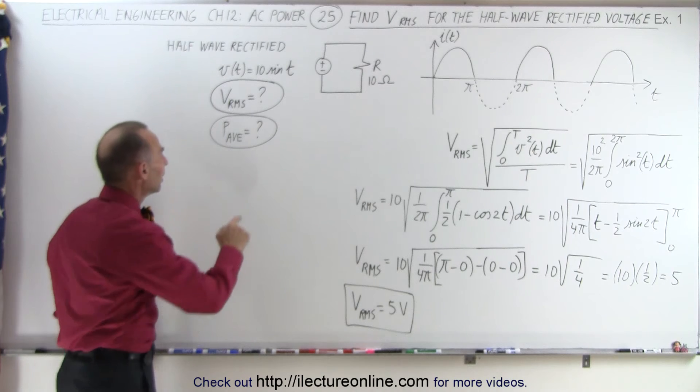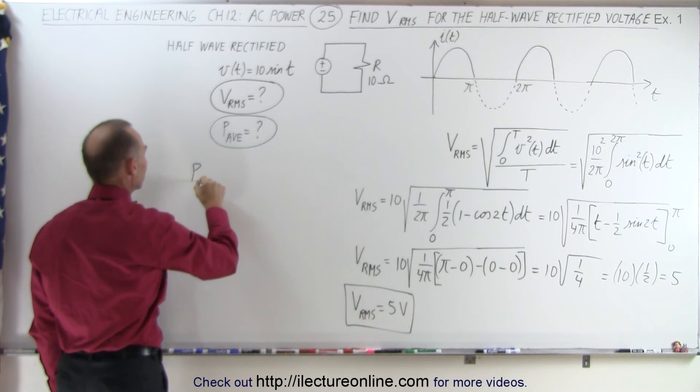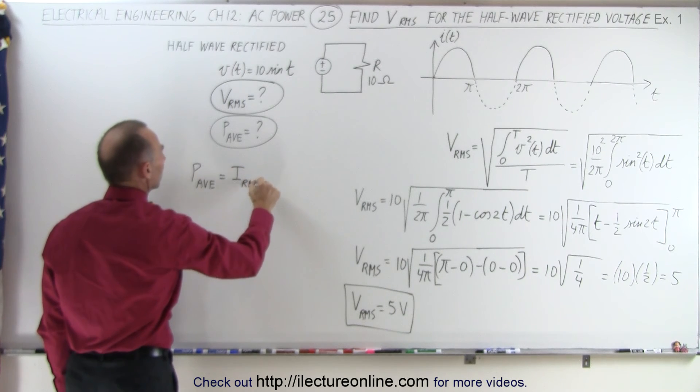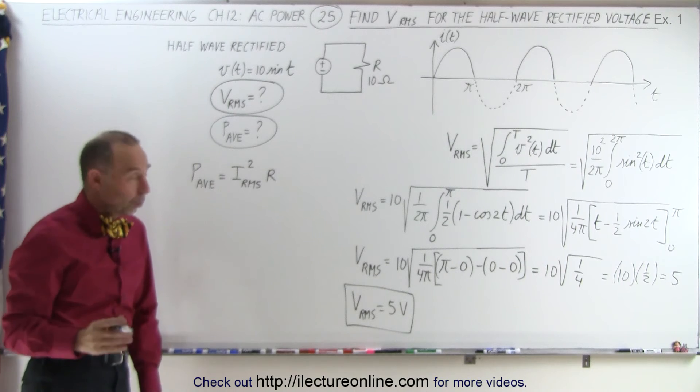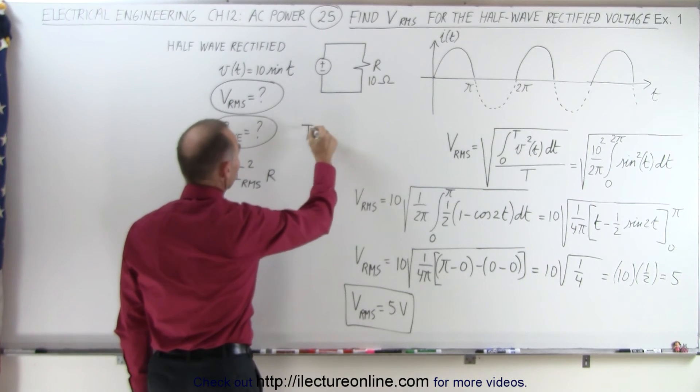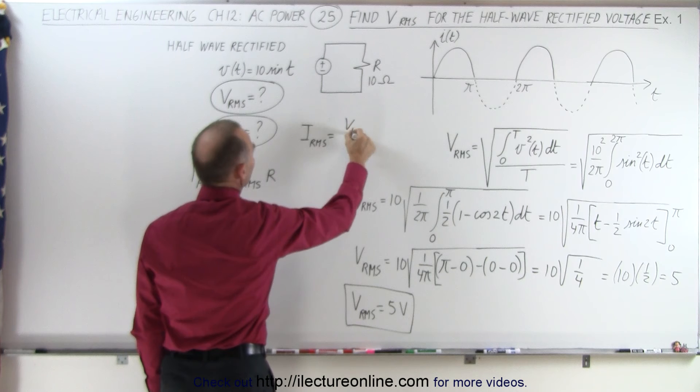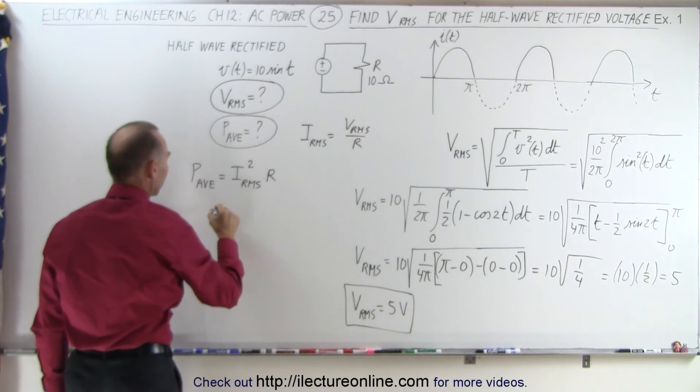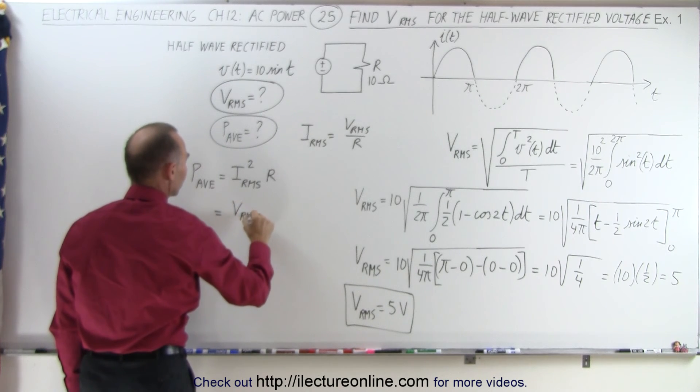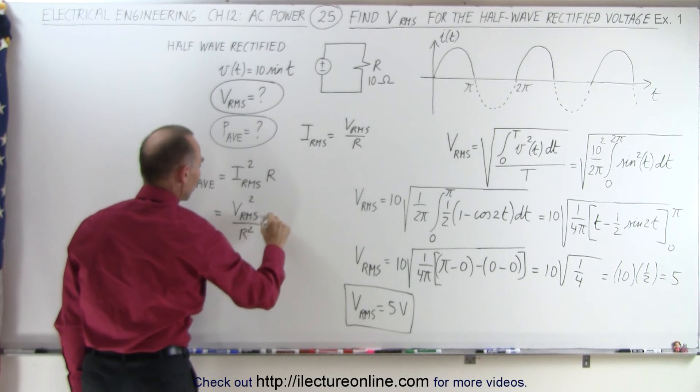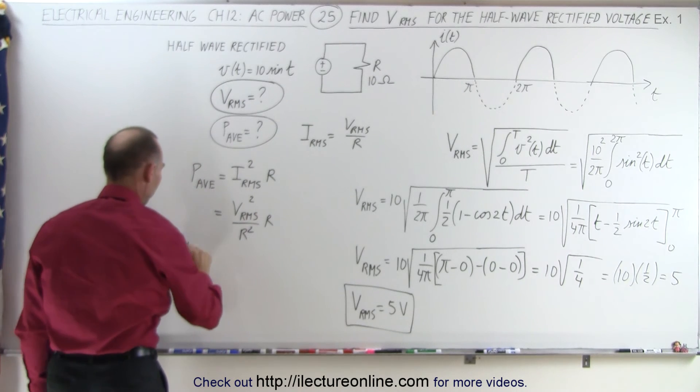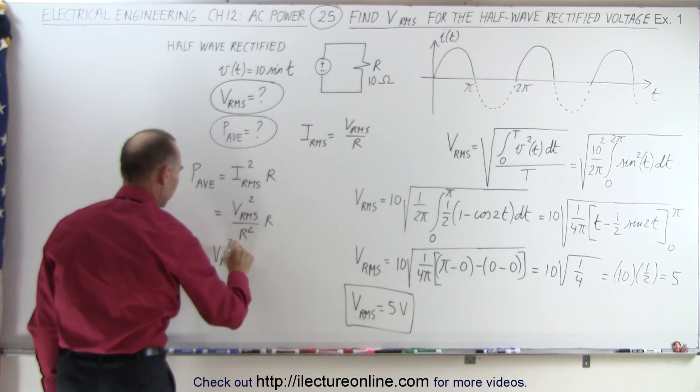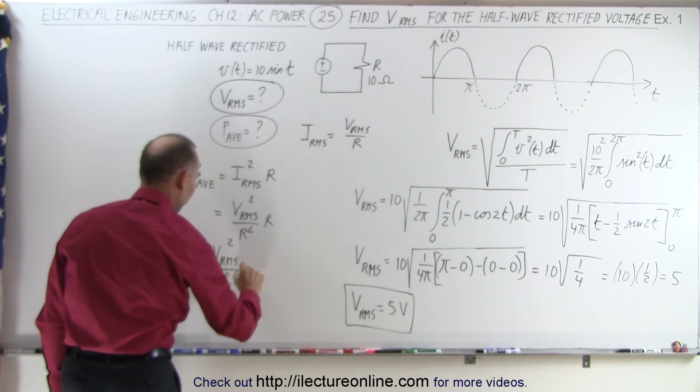Now we need to find the average power. We find that the average power is equal to IRMS squared times R. And then using Ohm's law, we realize that IRMS is equal to VRMS divided by R. So if we replace IRMS by this, we get this is equal to VRMS squared divided by R squared times R. One of the R's cancels out, so the average power can be found by taking VRMS squared divided by the resistance.